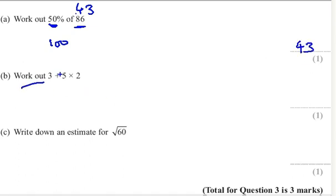Work out 3 plus 5 times 2. Now, I've done this. I did this in front of my year 11. I got it wrong. So if you're not paying attention, you do 3 plus 5 is 8 times 2 is 16 and that is wrong.